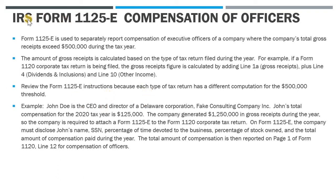For this video we're going to go over IRS Form 1125-E. This is a form that's included with either an S corp return or an 1120 corporate return, and it's used to disclose compensation paid to officers of a company — your CEO, CFO, COO, any kind of officer title. If you meet certain limitations or thresholds during the year for your gross receipts, then you have to include this form.